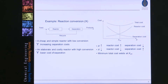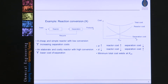If we have higher conversion, we will have much less unreacted feed to recycle, meaning a cheaper separation cost, but we will need a larger or longer reactor to achieve such high conversion. If we plot cost on the y-axis and conversion on the x-axis, we will find a total cost curve with an optimum or minimum total cost.